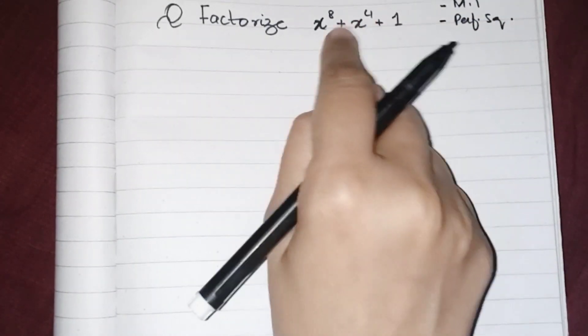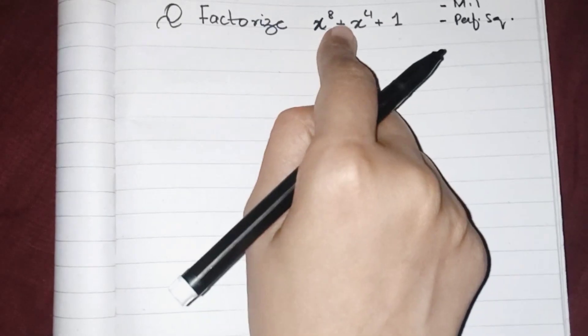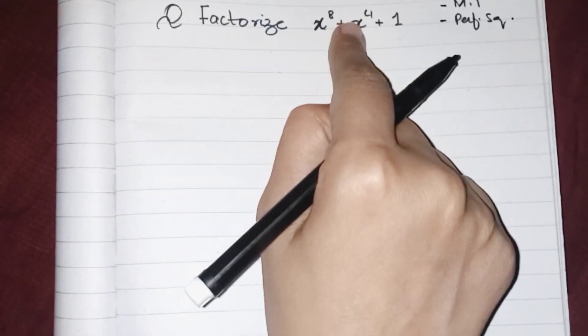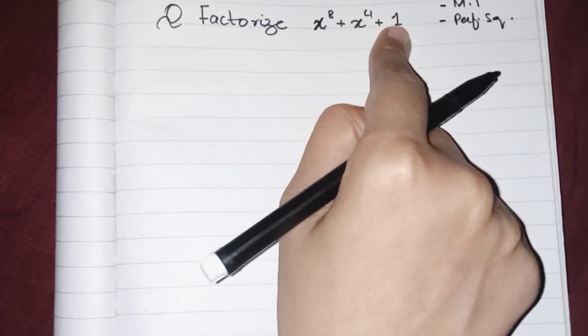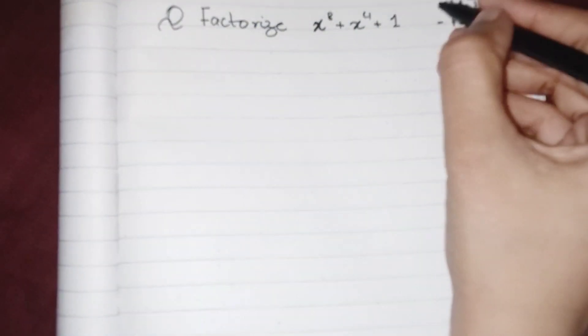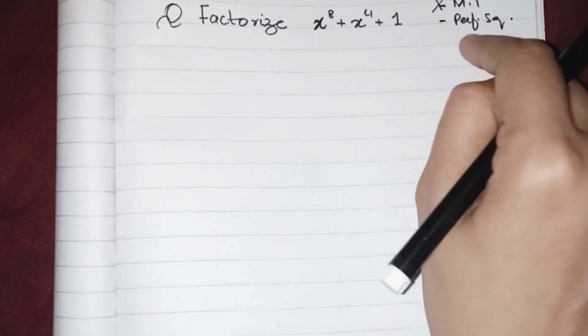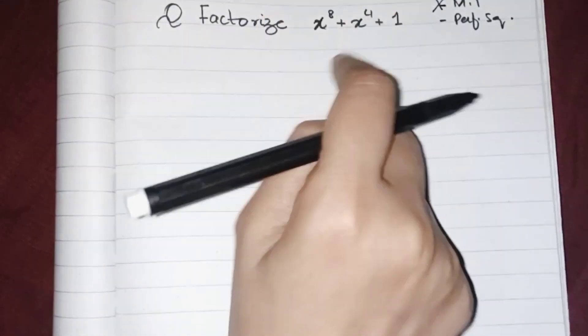Middle term is not possible over here. How would I know? Because the middle term is also one and the coefficient of first and last term is also one, so over here the middle term is not possible. So we can apply a perfect squaring method to make it a perfect square.